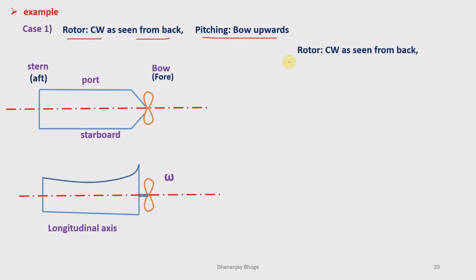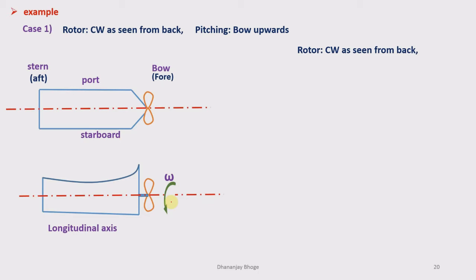The very first step is to draw the vector representing spin velocity — so first we will draw the spin vector. For that, let us mark the direction of spin velocity: it is clockwise as seen from the back side. This is the direction of rotation of the rotor as seen from the rear end, or stern end, of the ship. It is rotating in a clockwise direction. Now when you look at this motion from the front side, it will appear to rotate in a counterclockwise sense.